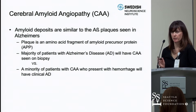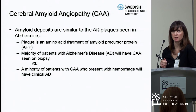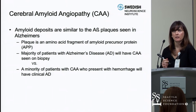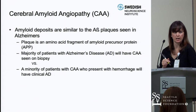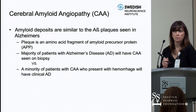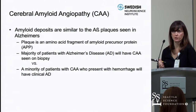There is a relationship between the amyloid beta plaques in cerebral amyloid angiopathy and Alzheimer's disease. The plaque is an amino acid fragment of the amyloid precursor protein. The majority of Alzheimer's disease patients will have some evidence of cerebral amyloid angiopathy on brain biopsy or postmortem, but only a minority of CAA patients who present with hemorrhage will have clinical Alzheimer's disease.